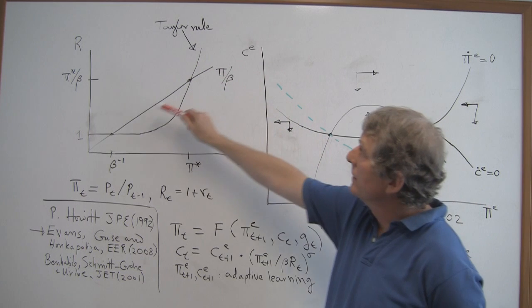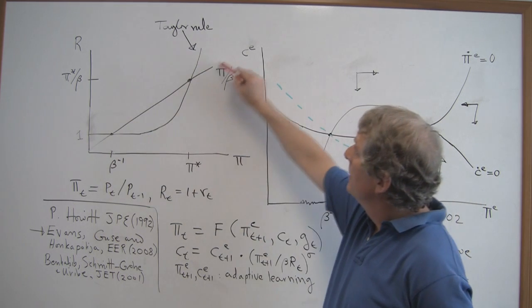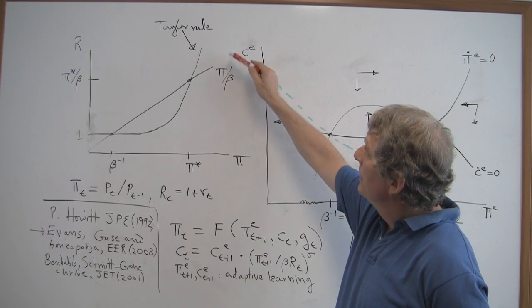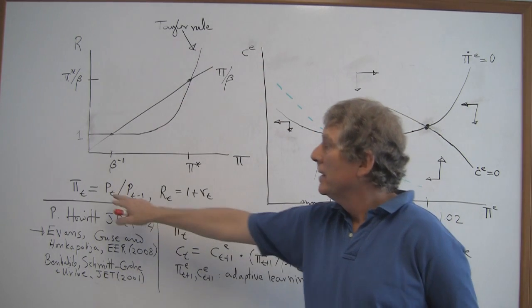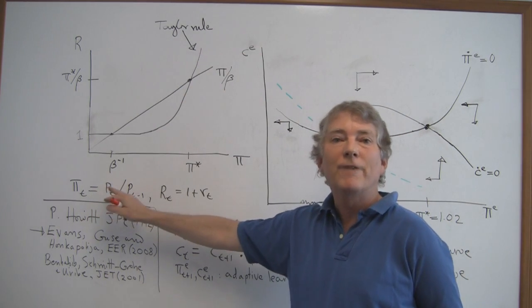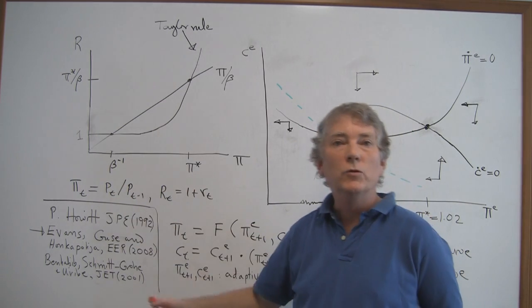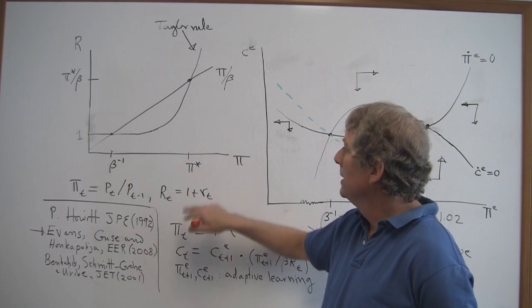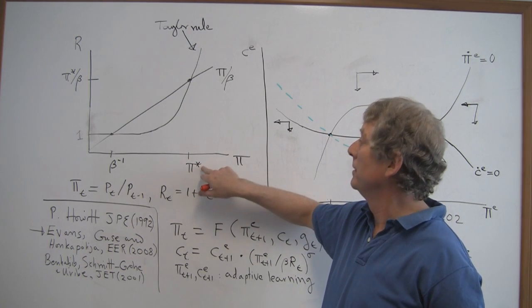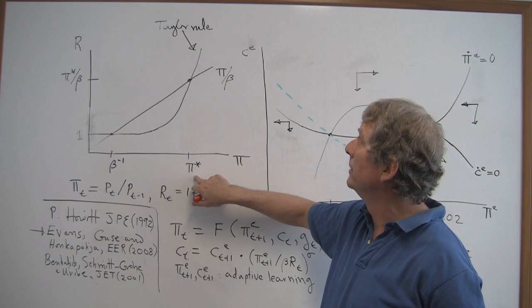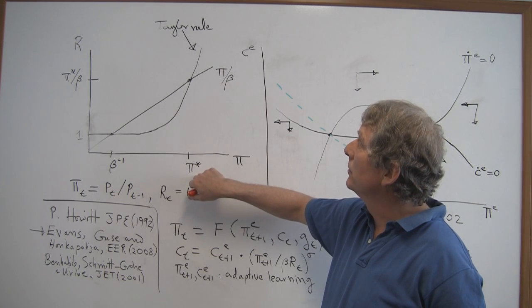Here we've got the Fisher line, pi over beta, and an interest rate rule, which I've denoted Taylor rule. So here, pi denotes the inflation factor. So 1.02 would be a 2% inflation rate. There's some target. Let's say it's 1.02 for the inflation rate, or pi star.